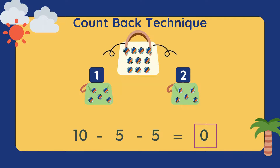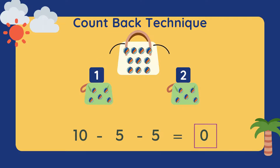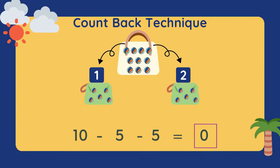10 minus 5 — we do count back. Put 10 at your mouth, put the number 5 at your fingers: 10, 9, 8, 7, 6, 5. Then put the answer 5 at your mouth and the second number 5 at your fingers: 5, 4, 3, 2, 1, 0. The answer is 0. This means the main bag technically has no more marbles.